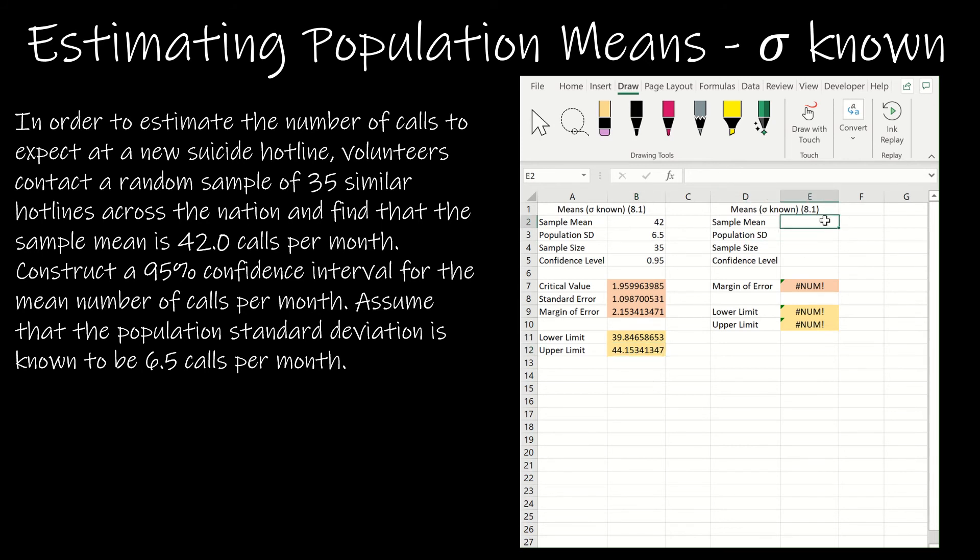Now, I can also do the same thing here. 42, 6.5, 35, oops, 35, and 0.95. And if you'll notice, I get the margin of error right away without having done anything.